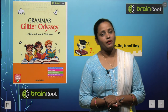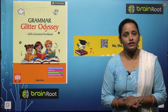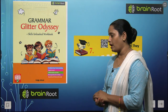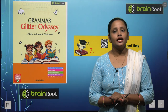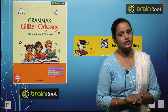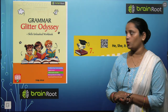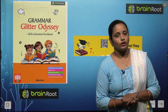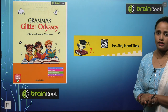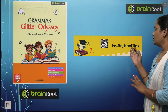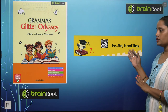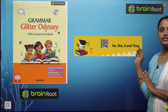Hello my dear kids, welcome back. I am Vandana and we are learning English grammar by Brain Root series. This is a book, Grammar Greater Odyssey, book 1. And today we are going to start with chapter number 7 and the name of the chapter is He, She, It and They.